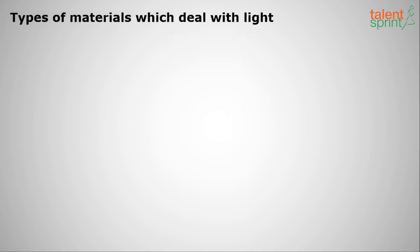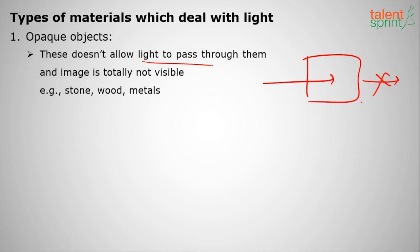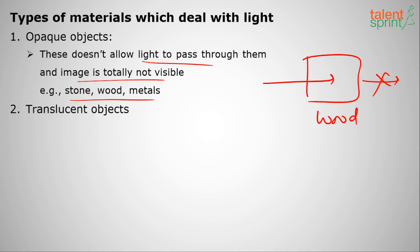There are three types of materials that deal with light: opaque, translucent, and transparent. Opaque objects do not allow light to pass through them at all — for example, wood, stone, and metals. If light falls on a wooden box, it does not come out. The image is not visible through opaque objects.